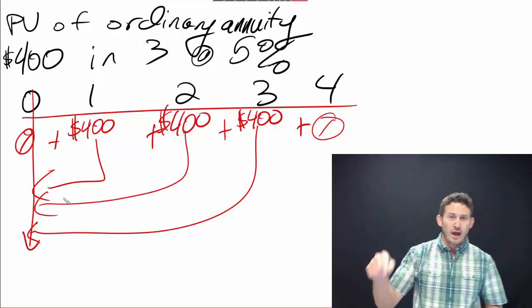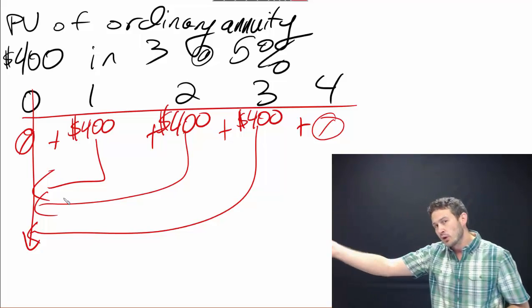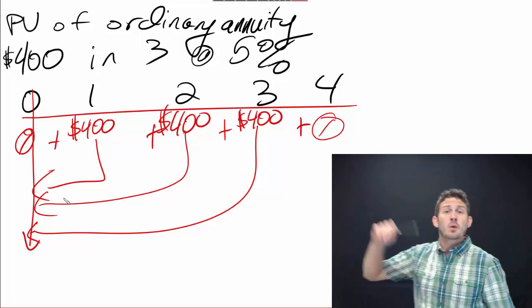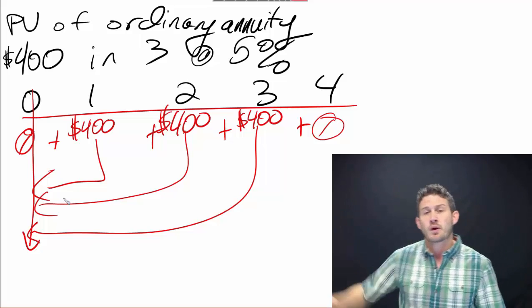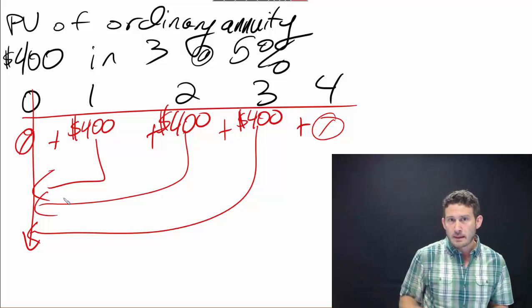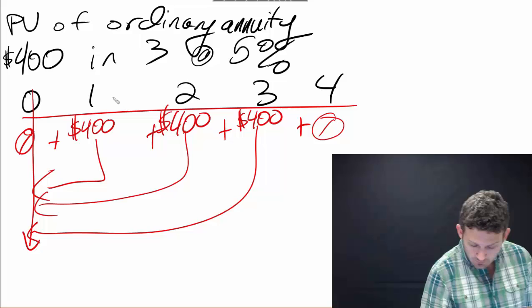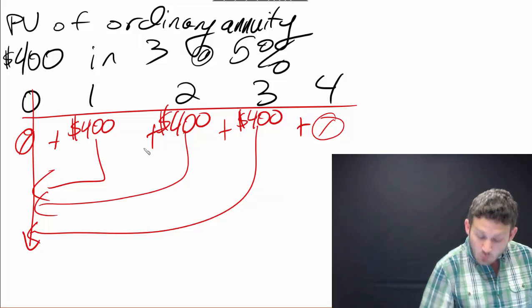That's what we're talking about: present value. What is our value right now, right this minute? We're looking at these future payments. We're getting $400 in one year, $400 in two years, $400 in three years. What are all these payments worth to us right now?